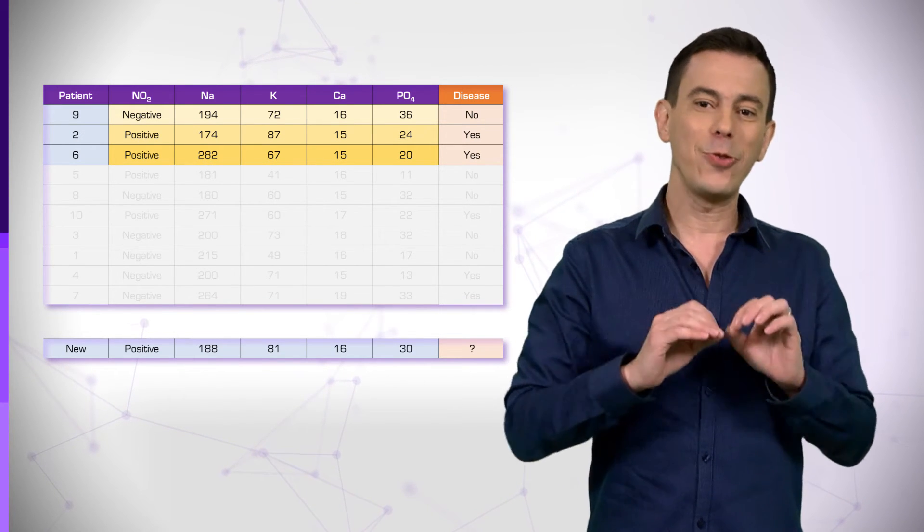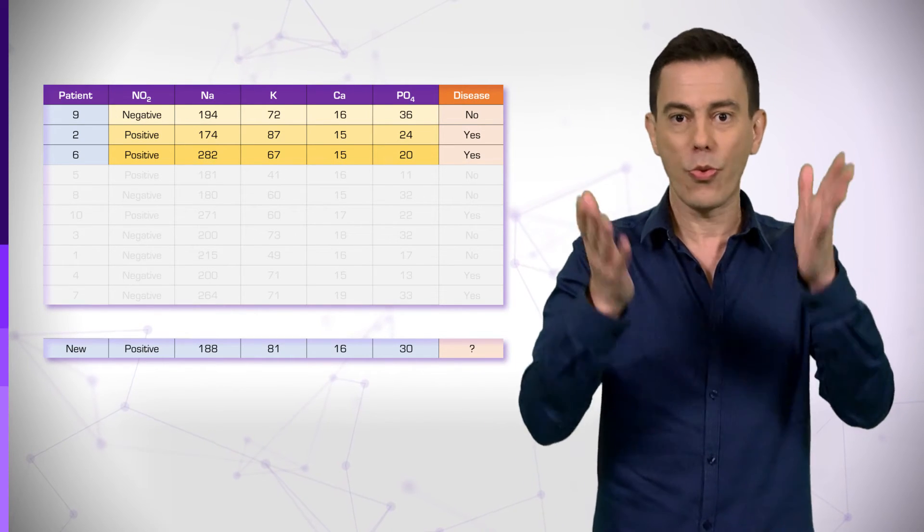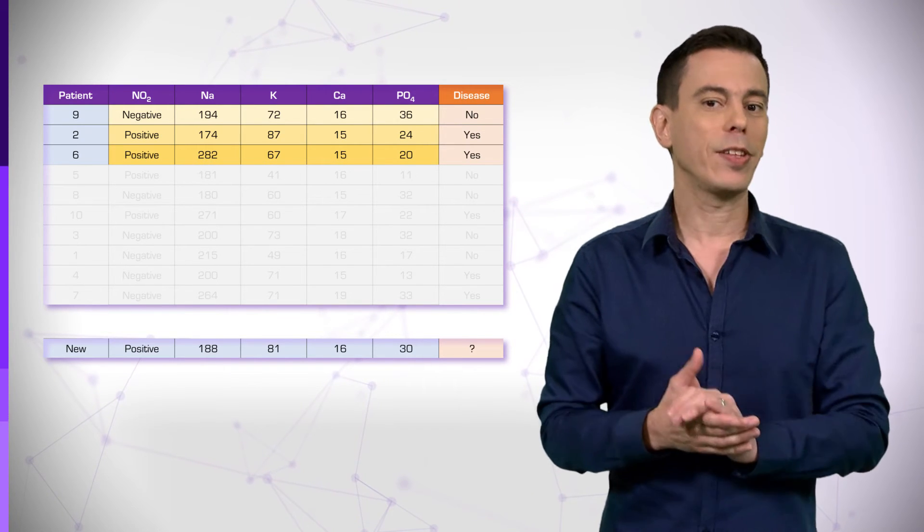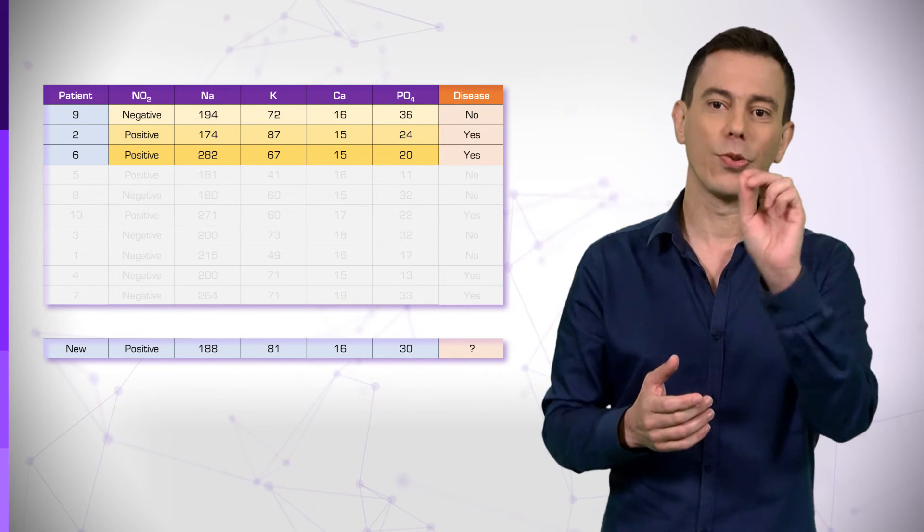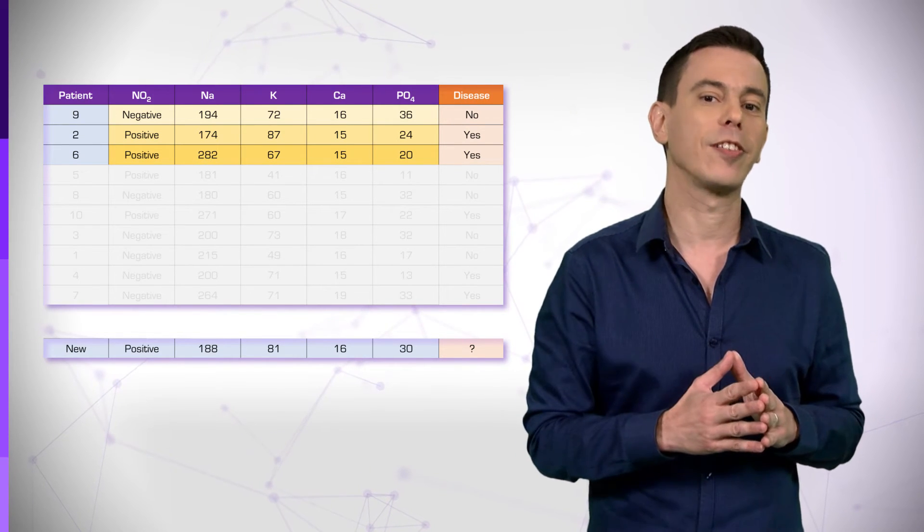Let's again assume we know that the correct number of nearest neighbors, k, is 3. How do we know that? Take some time to try and come up with a solution to this profound question. We will come back to it later on.